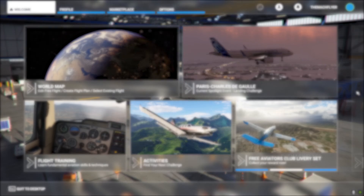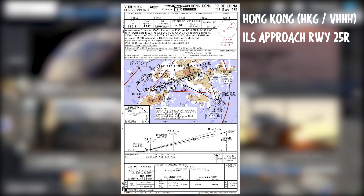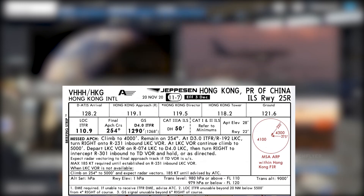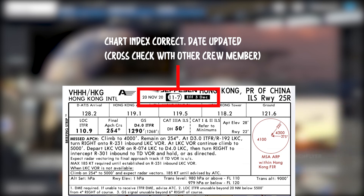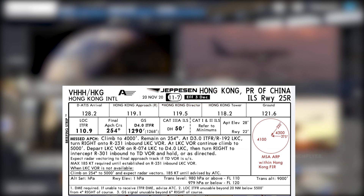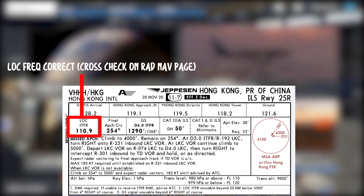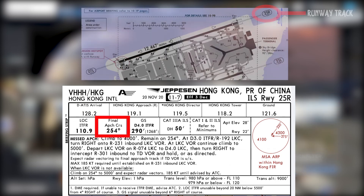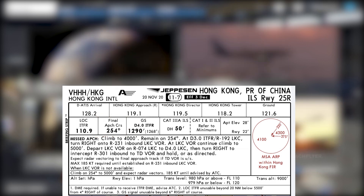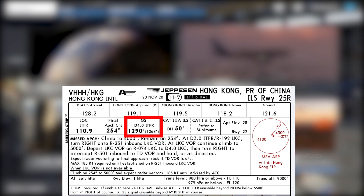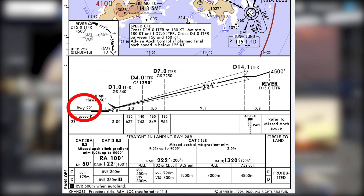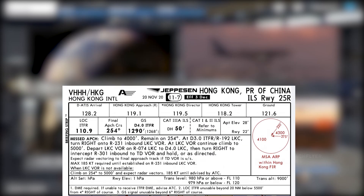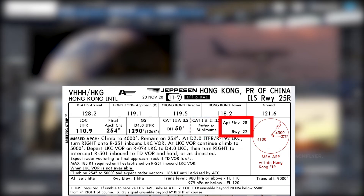Before we get into the simulator session, let me quickly go through the approach chart — the Hong Kong ILS Runway 25 Right. The chart index number is correct and the date is updated. Our localizer frequency is India Tango Foxtrot Romeo, 110.9, and the final approach course is 254, same as the runway track. For the glide slope, we pass 4 miles ITFR at 1,290 feet. Runway elevation for RWY 25R is 22 feet, airport elevation is 28 feet, and we'll stick to the CAT 1 minima today.